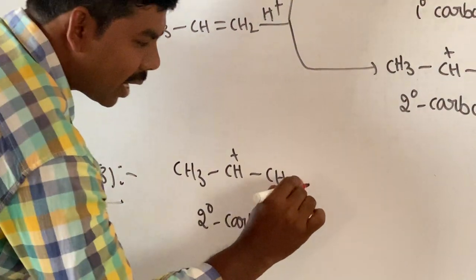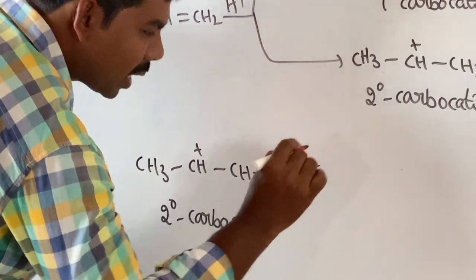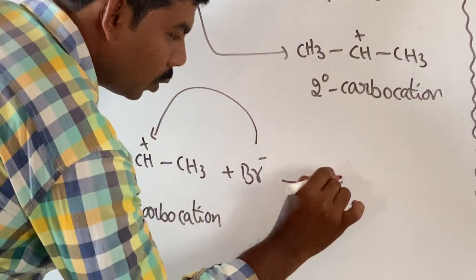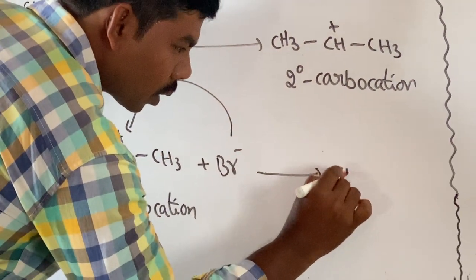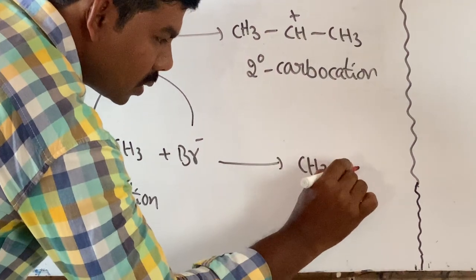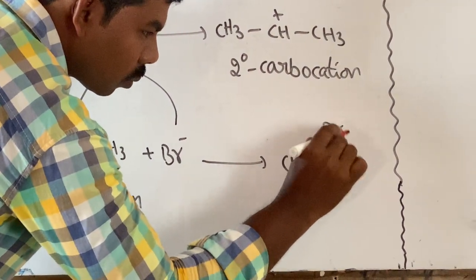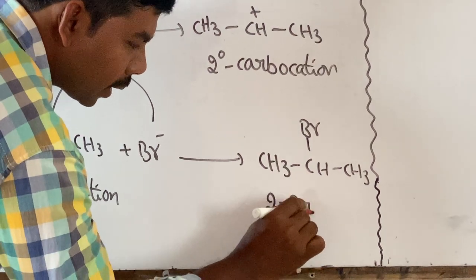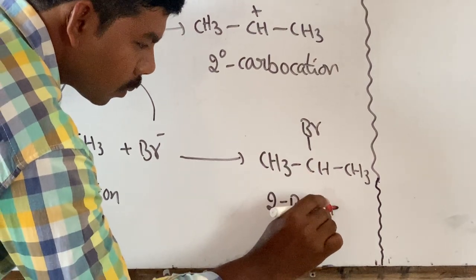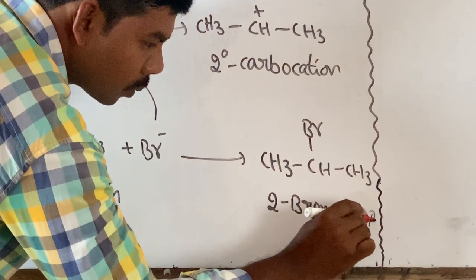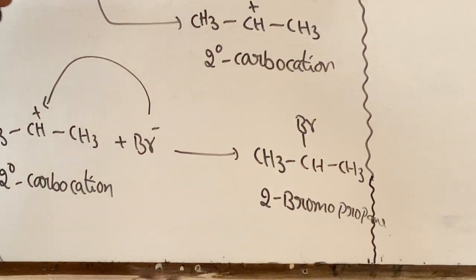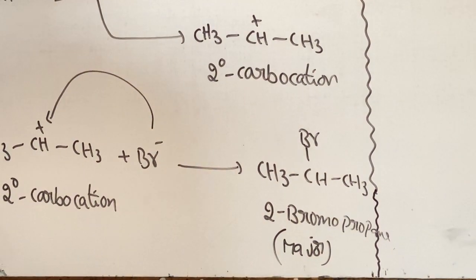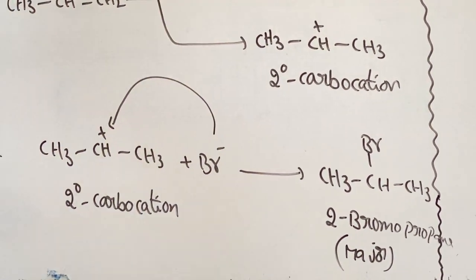CH3-CH⁺-CH3, the secondary carbocation, is attacked by the nucleophile Br⁻ to give CH3-CHBr-CH3. This is 2-bromopropane, which is the major product — this is Markovnikov's product.